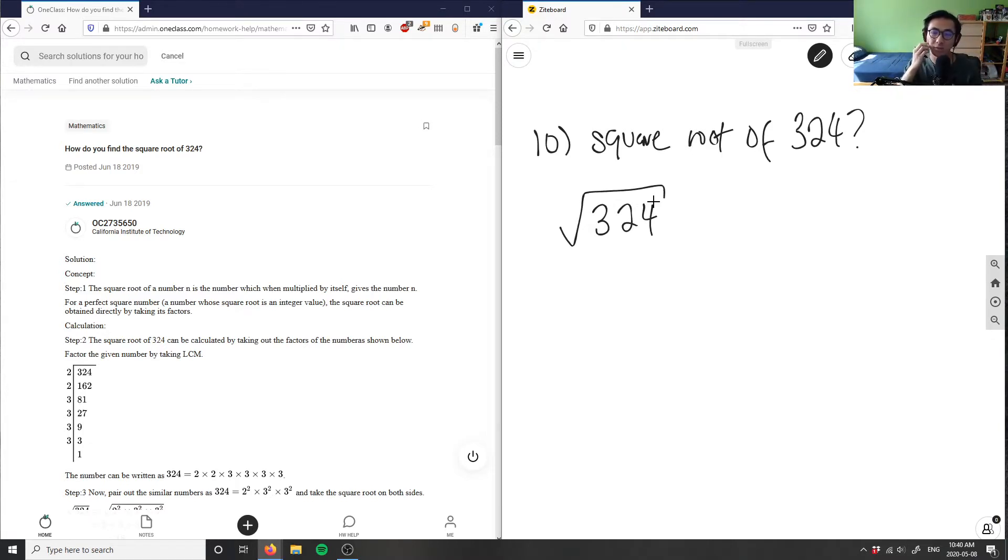So in order for us to calculate the square root of 324, what we're going to do is use this concept of prime factorization. We're going to take out all the prime factors of 324.